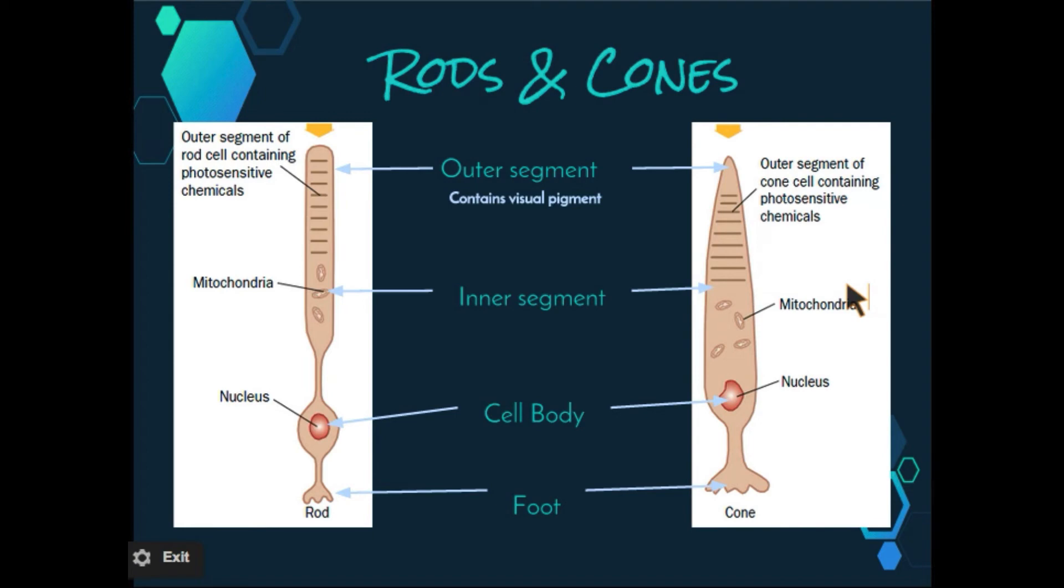Rhodopsin is the only pigment present in rods, which is easy to remember, rhodopsin rods, whereas cones contain what are known as iodopsins. And there are three different types of iodopsin, one found in each type of cone cell. Each type is sensitive to a different wavelength of light, being red, green or blue. The cone cells are therefore responsible for color vision, while the rods can only allow us to see black and white.